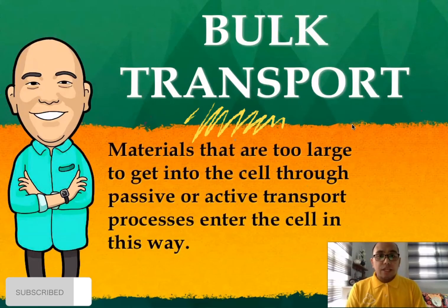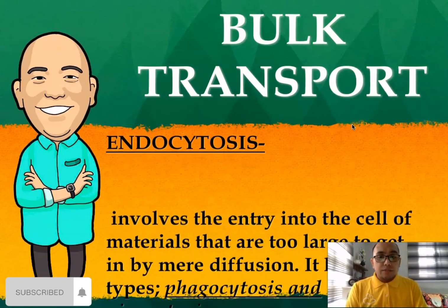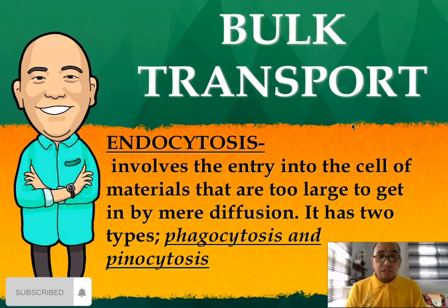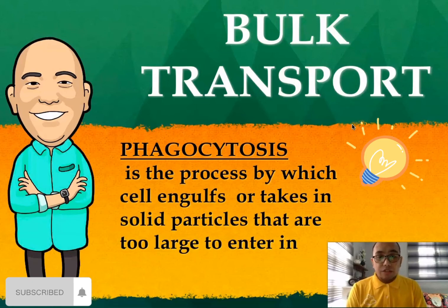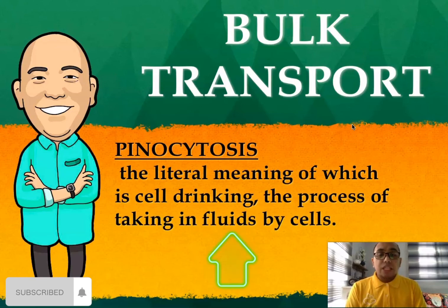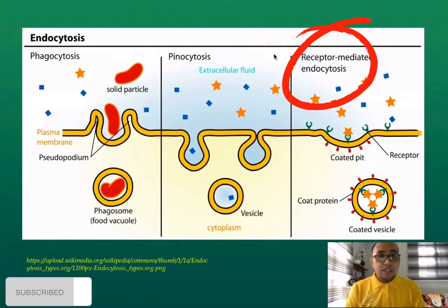Now for the last type — bulk transport. Materials that are too large to enter the cell through passive or active transport enter in a different way. Endocytosis involves the entry into the cell of materials too large to get in by diffusion. It has two types: phagocytosis (cell eating) — the process by which the cell engulfs solid particles too large to enter; and pinocytosis (cell drinking) — the process of taking in fluids by the cell. This diagram shows the three types of endocytosis: phagocytosis, pinocytosis, and receptor-mediated endocytosis, which uses the protein clathrin to target specific molecules or ions.